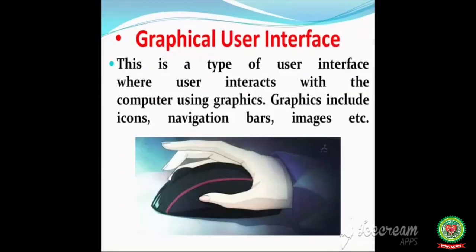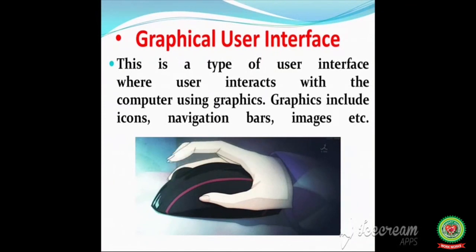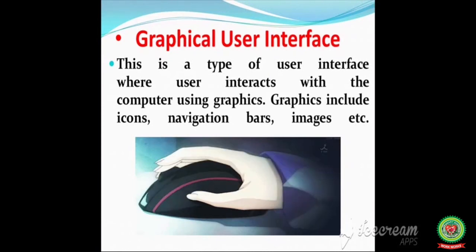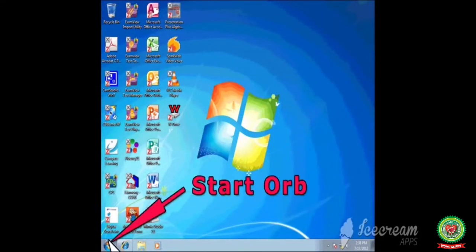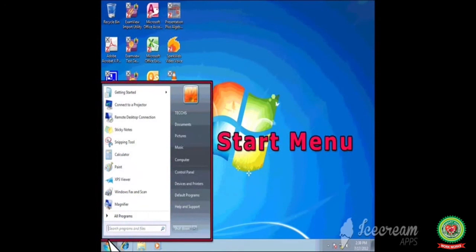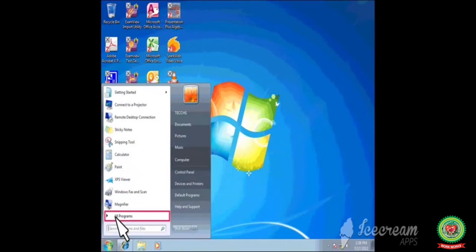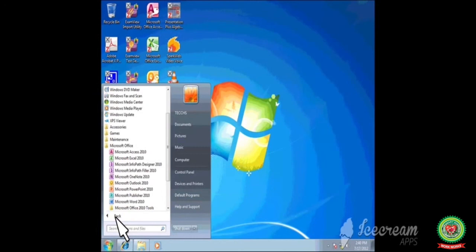In graphical user interface, the user interacts with the computer using graphics. Graphics include icons, navigation bars, images, etc. A mouse can be used while using this interface. For example, Windows has graphical user interface.